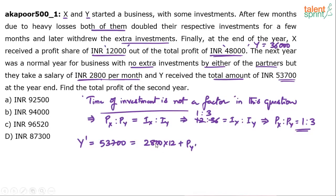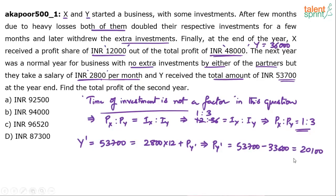We know they are taking a salary of ₹2,800 per month, so for 12 months Y gets 2,800 × 12 = ₹33,600 as salary. The remaining part out of ₹53,700 is profit. So the profit of Y in the second year = 53,700 − 33,600 = ₹20,100.